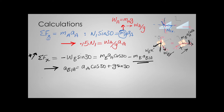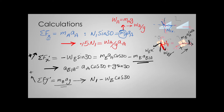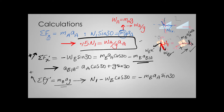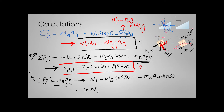Now let's write Newton's second law for the other direction — I again assume this direction to be positive. The forces applied in this direction are N1 and the other component of the weight. Using the diagram, we can write the equation. So now we have three equations: the first, the second, and the third.